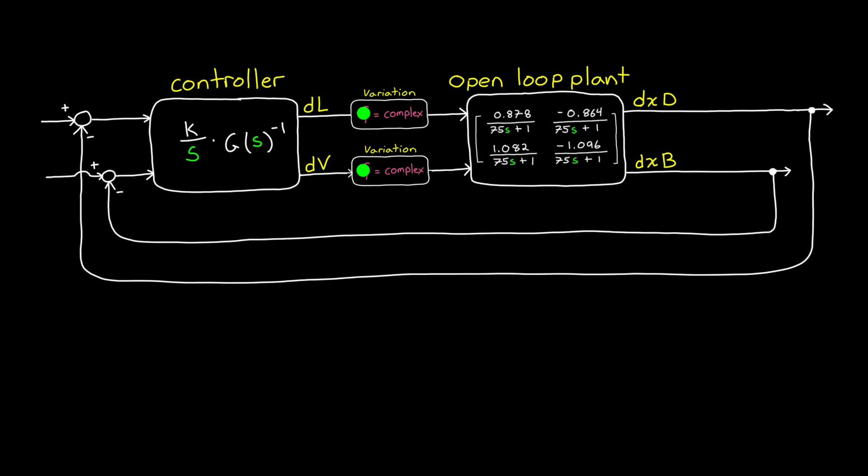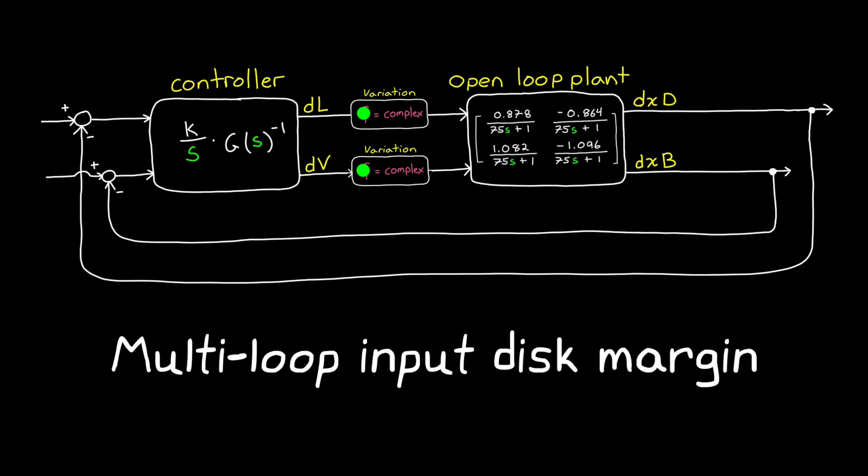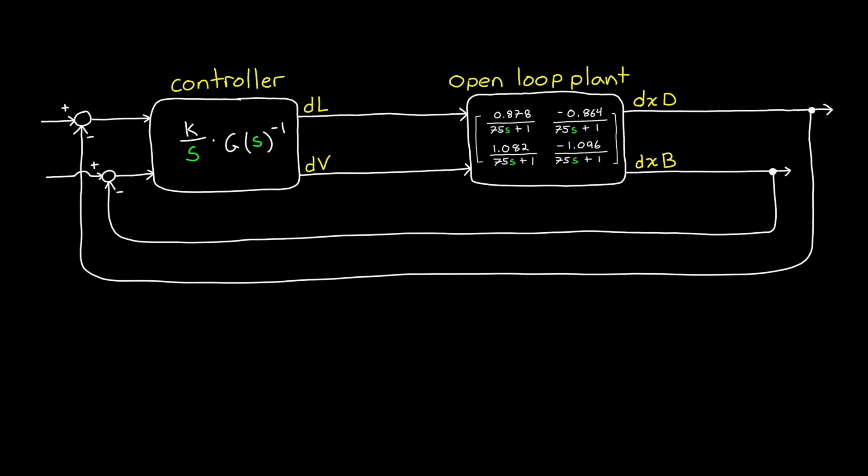Now, even if there was no input uncertainty, flow rates were exactly what we requested, we may still have uncertainty on the outputs. For example, we might not know exactly how the two outputs are affected by the input flow rates. So, just like we did before, we may vary one output, or the other, or we may vary both of them at the same time. And we can find the single channel disk margin or the multi-loop output disk margin, respectively.